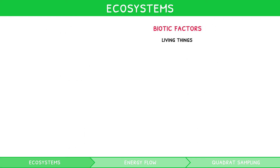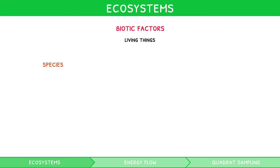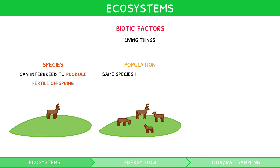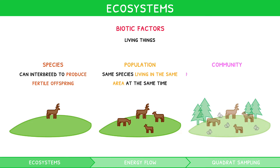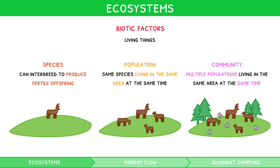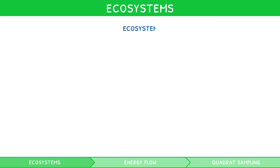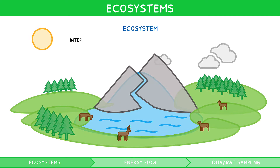When discussing biotic factors, they are roughly classified via the following hierarchy. A species is a group of organisms that can interbreed and produce fertile offspring. A population is a group of organisms of the same species living in the same area at the same time. A community is multiple populations living in the same area at the same time, which interact with one another. Hence, an ecosystem can be defined as the interaction of a community with its abiotic environment.